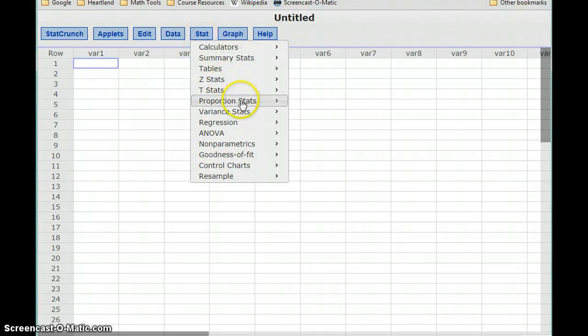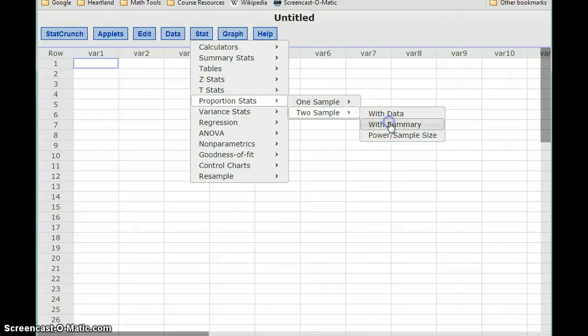So we'll go to stat, select proportion stats, and in this case we'll be using 2 sample with summary.